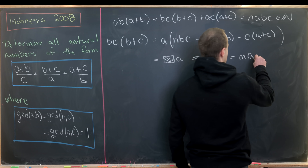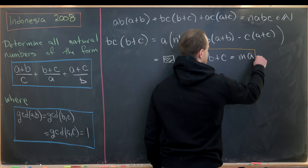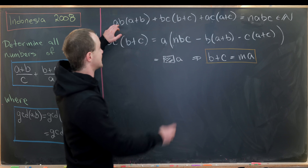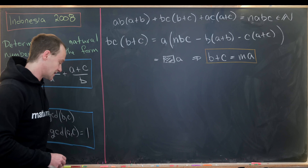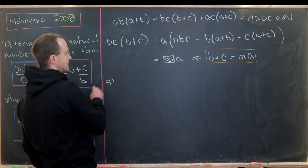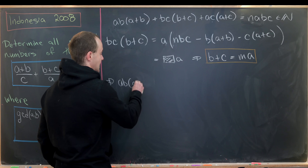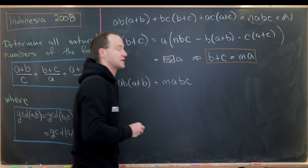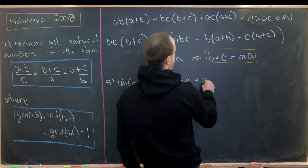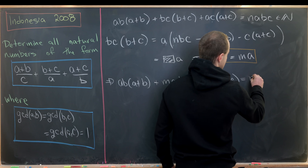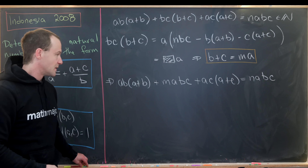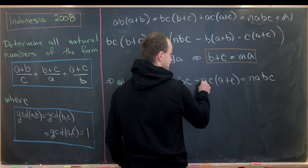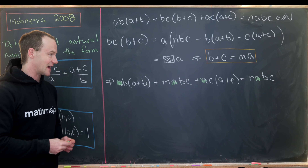We say B+C = M·A. Now let's take this expression for B+C, plug it into our original equation, and notice that gives us a multiple of A in all terms, which we can cancel. Substituting B+C = M·A, the middle term becomes M·A·B·C. Since everything is a multiple of A, we divide the entire equation through by A.